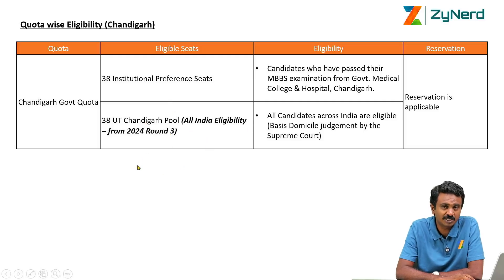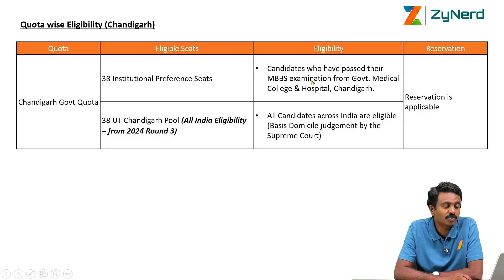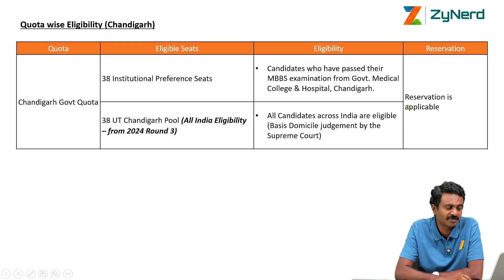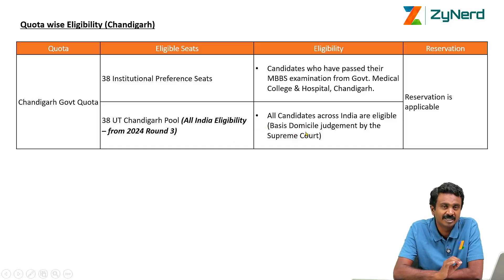With the judgment, we believe that this set of seats will be on an all India merit basis. Only 38 seats would be for institutional preference in Chandigarh. Candidates eligible for IP seats are anybody who has passed MBBS from Chandigarh — the only medical college in Chandigarh is GMC Chandigarh. For the 38 UT Chandigarh pool seats, from this year it should be all India basis eligibility, so all candidates across India are eligible.